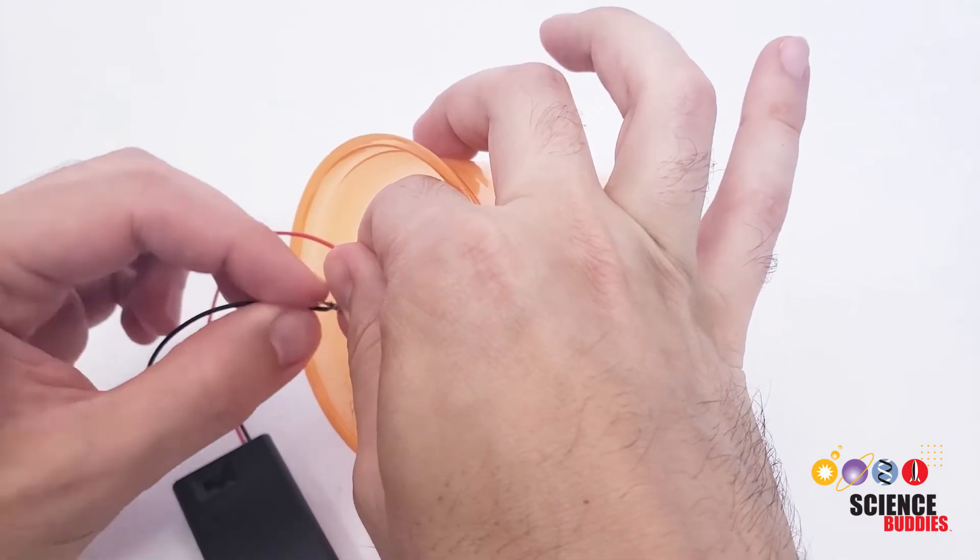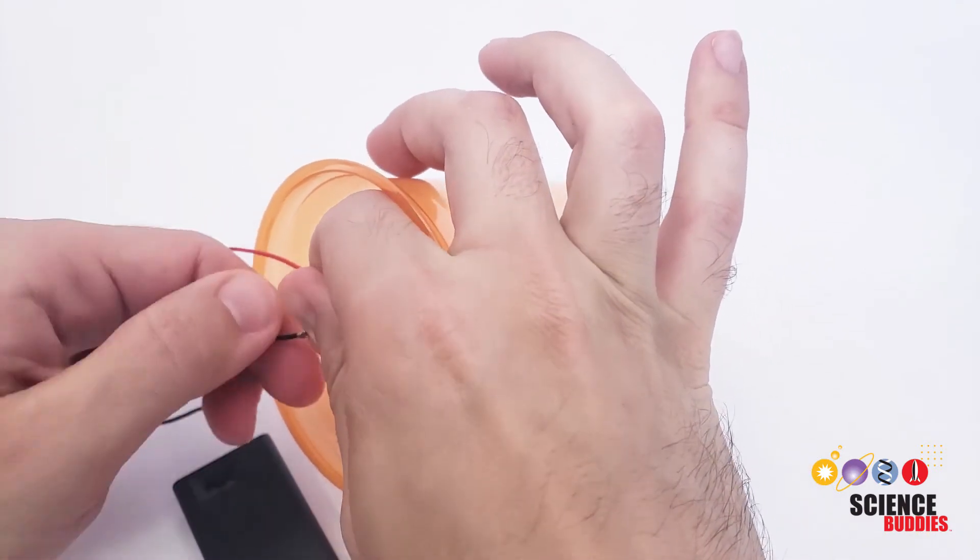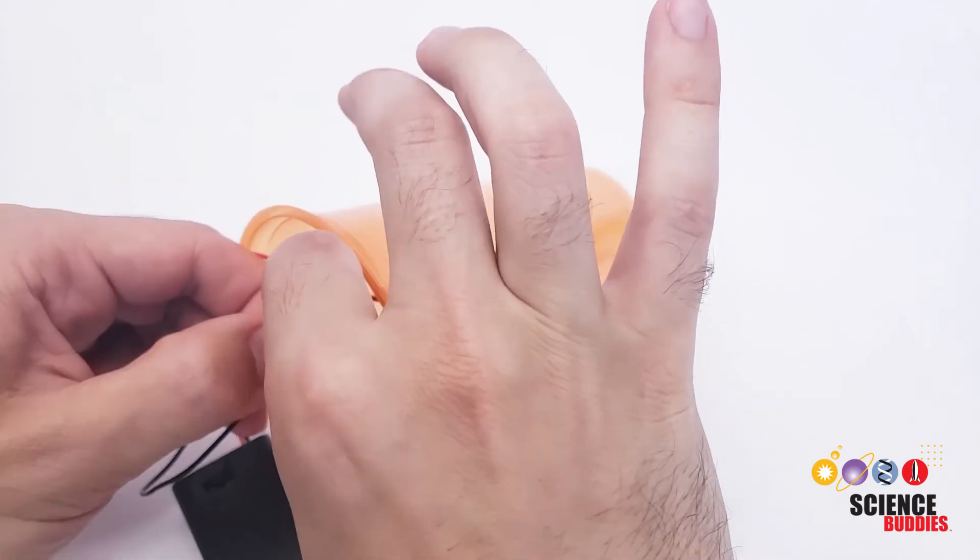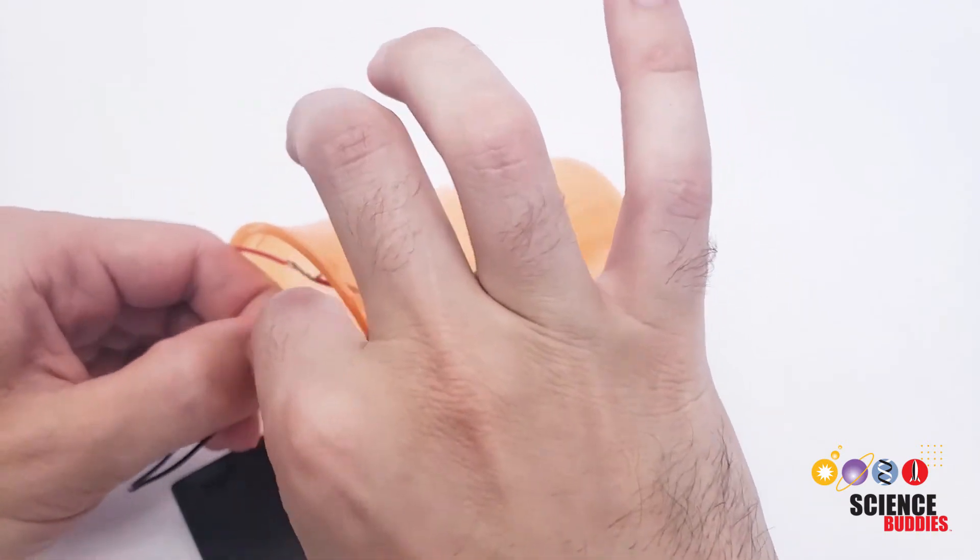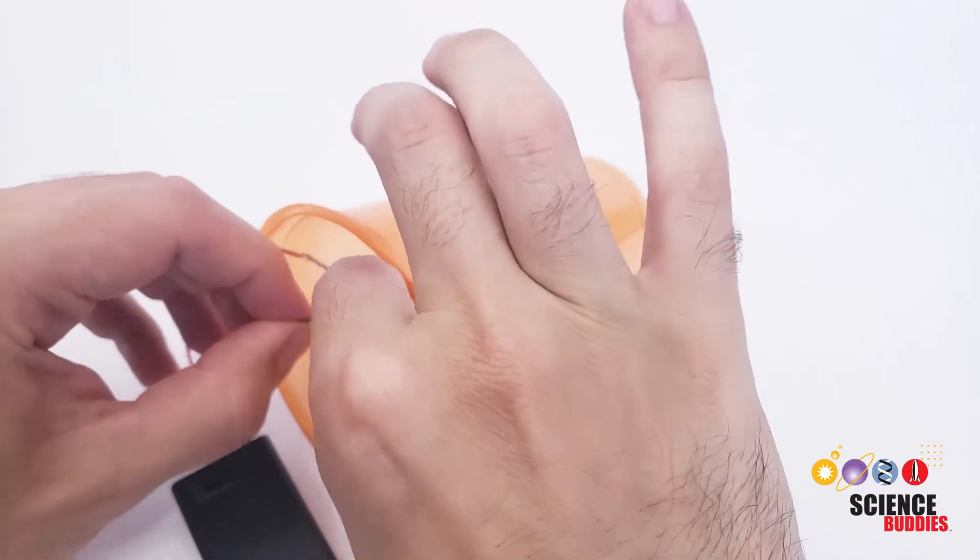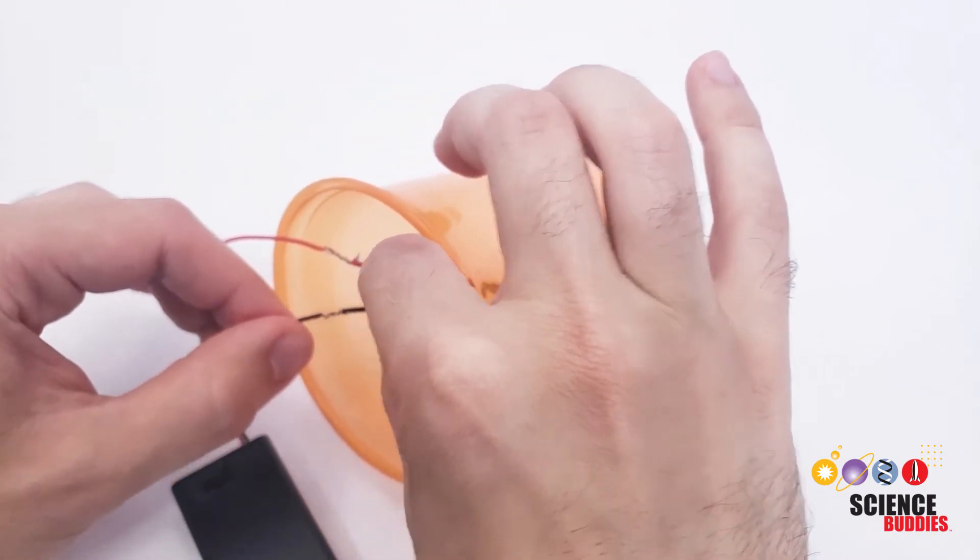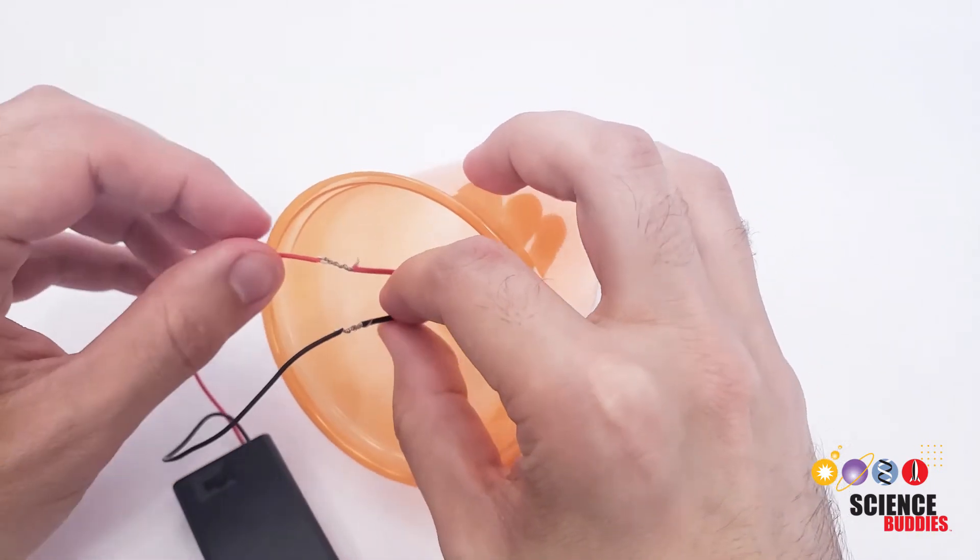So again, if you have a soldering iron and you know how to solder or you have adult supervision for help with soldering, you can solder these connections to make them a little sturdier. But twisting them together nice and tight so if you tug on the wires a bit, they don't come apart will usually be good enough.